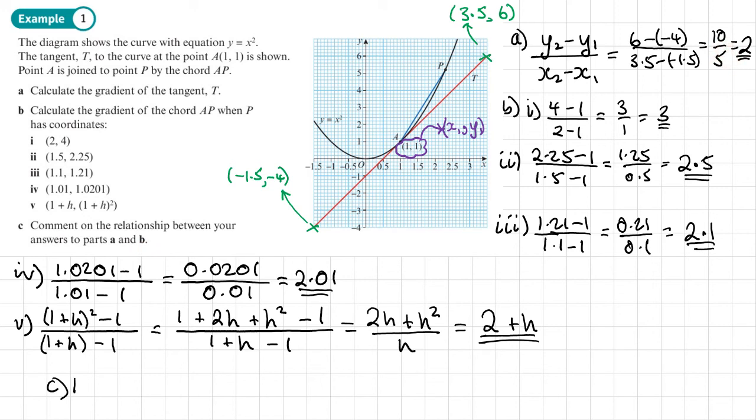Part a is the exact gradient because we got that basically by picking the coordinates and we know they're whole number values, so we've got the exact value for the gradient. Whereas each one of these here, we're working out an estimate for the gradient.